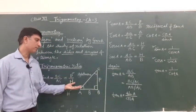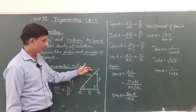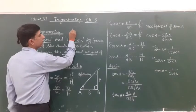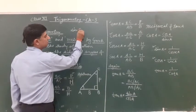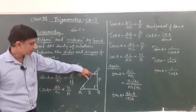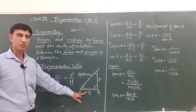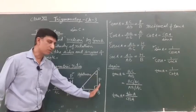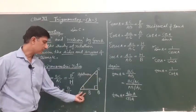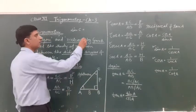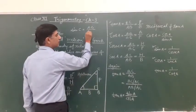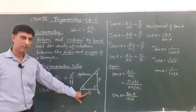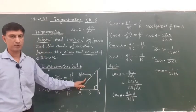So if we change the angle, if we find sine C, then the side perpendicular to C becomes AB. 90 degrees remains as it is. This becomes the base. Then sine C is represented by AB upon AC. Here AB is the perpendicular, this became the base, and this is hypotenuse.